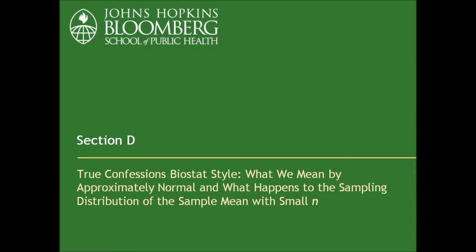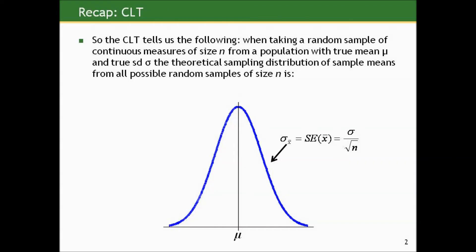Now we're going to reveal some true confessions biostatistic style — what we mean by approximately normal, and what happens to the sampling distribution of the sample mean when we have really small samples. The central limit theorem gives us some tools right up front. You don't have to take many samples; you can only take one, because it tells you what would happen to the sample means had you taken many of the same size. The distribution of those sample means would be normal, centered at the true mean, with spread equal to the standard deviation of individual values in the population divided by the square root of the sample size.